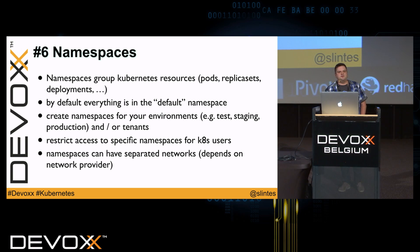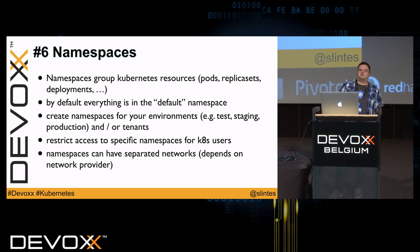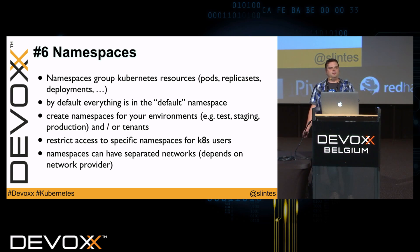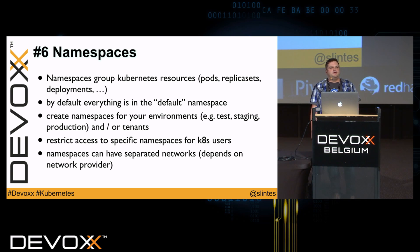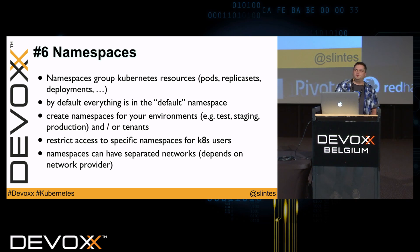The next feature is namespaces. Namespaces group Kubernetes resources like pods, replica sets, deployments, and services. Normally everything is in a default namespace, but you'll likely want to create new namespaces — for example, for test, staging, and production environments, or for different clients of your cluster, offering some kind of multi-tenancy. You can restrict access to namespaces for Kubernetes users, and namespaces can also have separated networks depending on the network provider you use.